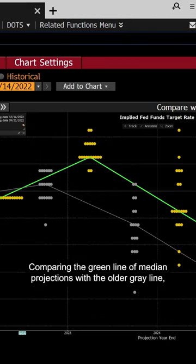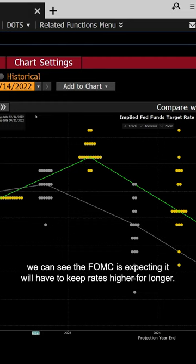Comparing the green line of median projections with the older grey line, we can see the FOMC is expecting it will have to keep rates higher for longer.